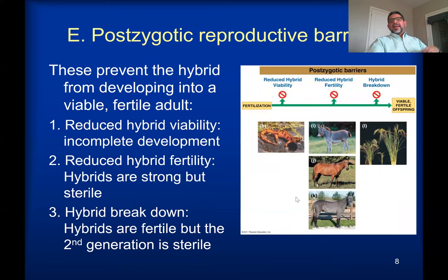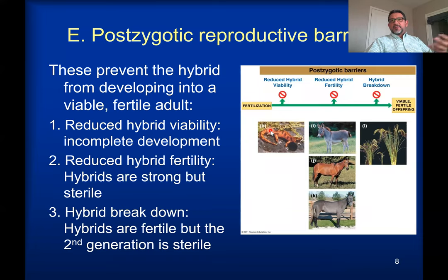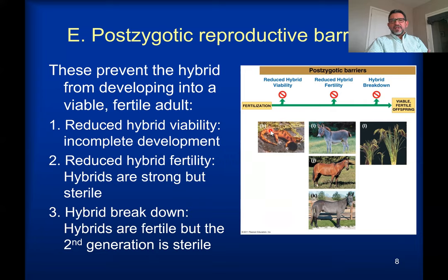When mating happens and gametes fuse to form a zygote, there are still mechanisms called post-zygotic barriers. After the zygote forms, two members of different species may not be able to produce viable fertile offspring. Take the case of reduced hybrid viability: many different types of salamanders can mate, and the egg and sperm of two different species can fuse, but the embryos fail to develop — they never emerge from their larval or developmental stages. In other cases young may be born, but they are feeble, weak, susceptible to disease, and don't survive to reproductive age. That is reduced hybrid viability.